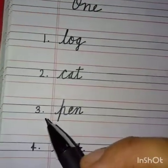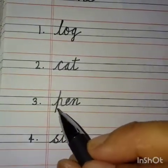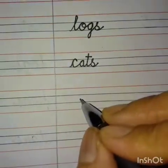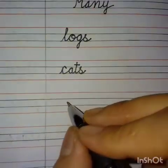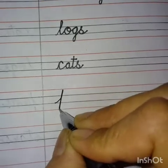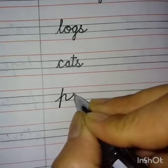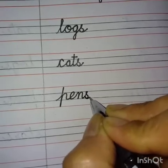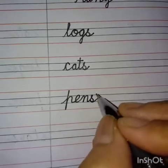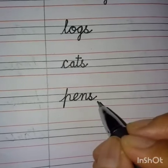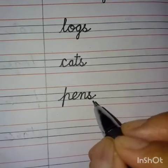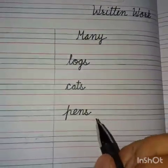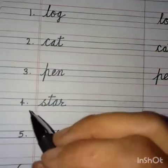Number three: P-E-N — Pen. We will make many. P-E-N-S. We will add S at the end of the spelling. Many pens.